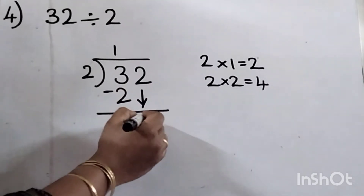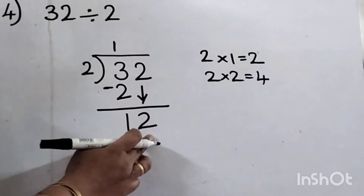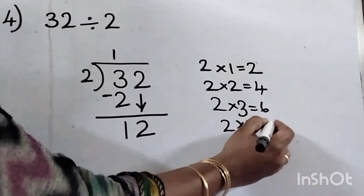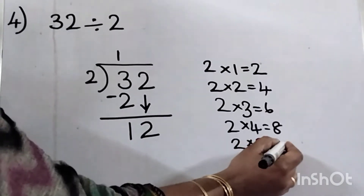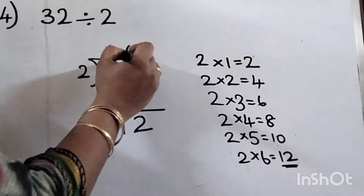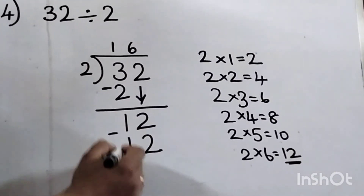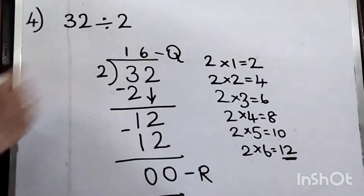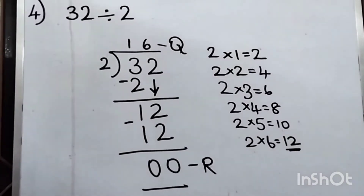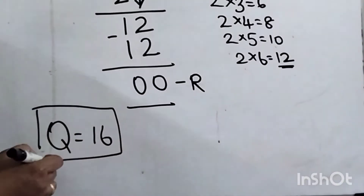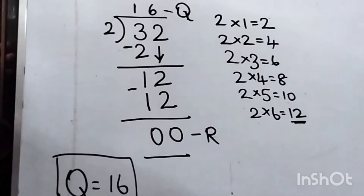Take the next digit — it is 12 now. 2 twos are 4, 2 threes are 6, 2 fours are 8, 2 fives are 10, 2 sixes are 12. We got 12 — that is 6 times. So 6 times 12. Subtract: 2 minus 2 is 0, 1 minus 1 is 0. Remainder is 0, quotient is 16. 32 divided by 2 equals 16.